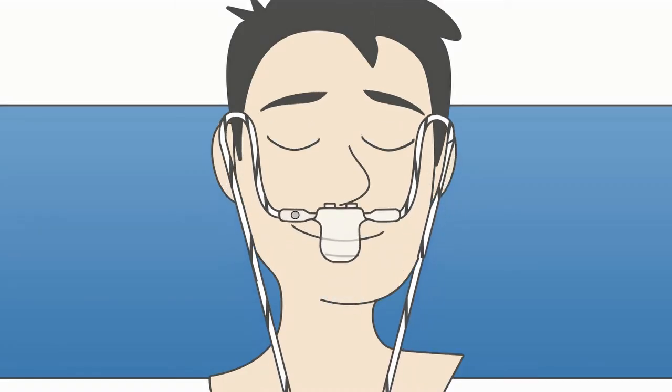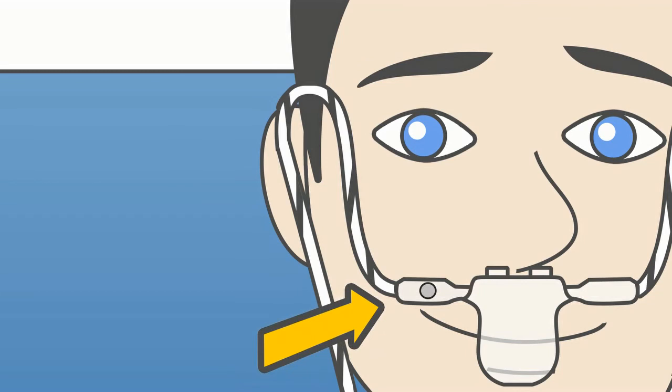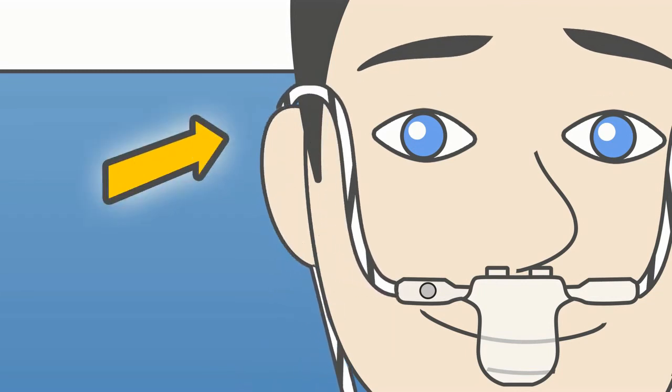Now, place the breath sensor with the two round humps under your nose. The sensor is positioned correctly when the single large hole is on the right side of your face and the tubing is placed behind each ear.